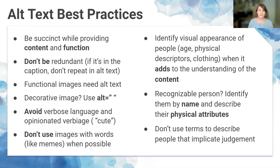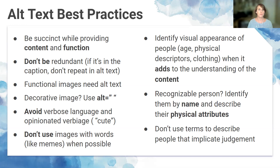When describing people in alt text, identifying visual appearance is important only if it adds to the understanding of the content. Instincts for political correctness can inadvertently result in redacting information when we actually want to add more precise language to increase inclusivity. Physical features that are immediately noticeable or mutually agreed upon should be described — including physical disabilities. When describing a recognizable person, identify them by name and describe their physical attributes. If an individual is not a public figure and the context doesn't imply the importance of who is represented, it may not be appropriate to identify them. Implement inclusive language previously discussed to avoid terms that implicate judgment.